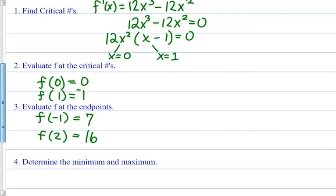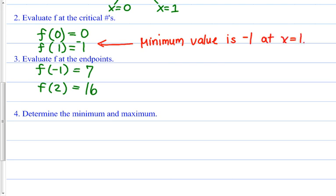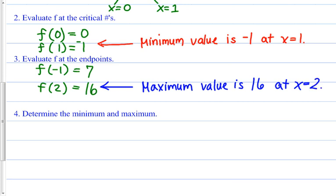Step 4, determine the minimum and maximum. Looking at all four values — 0, -1, 7, and 16 — the smallest is -1, so the minimum value is -1 at x = 1. The biggest is 16, so the maximum value is 16 at x = 2. We just found the extrema on this interval.